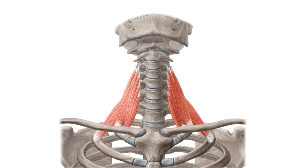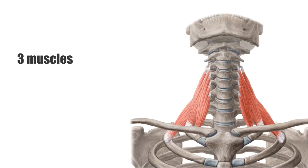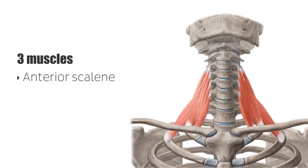The scalene muscle group contains three muscles that are located at the lateral neck, as you can see here on this image, so on the sides of your neck. These are the anterior scalene, the middle scalene, and the posterior scalene. Sometimes there is a small fourth muscle, which is known as the scalene minimus.